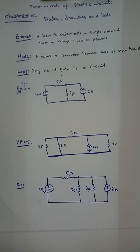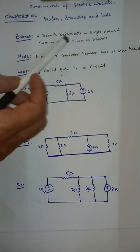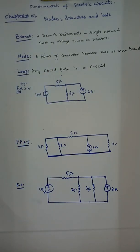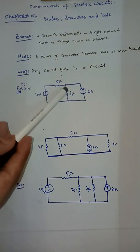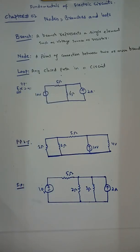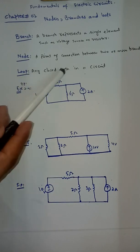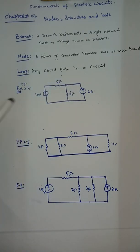Bismillahirrahmanirrahim. Fundamentals of Electric Circuits, Chapter 2. In this video lecture we will learn about nodes, branches, and loops. A branch represents a single element such as a voltage source, current source, or resistor. A node is a point of interconnection between two or more branches. A loop is any closed path in a circuit.